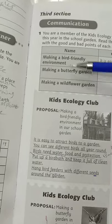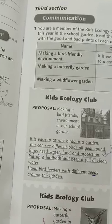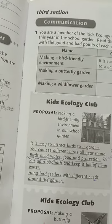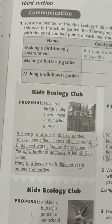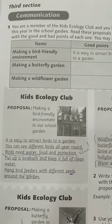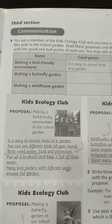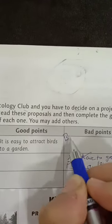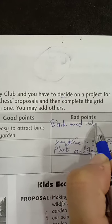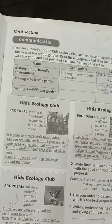According to this paragraph on making a bird-friendly environment: good points — it's easy to attract birds to a garden. Bad points — birds need water, birds need food, and other birds need protection. We have three types of birds, each needing something different, which presents challenges.